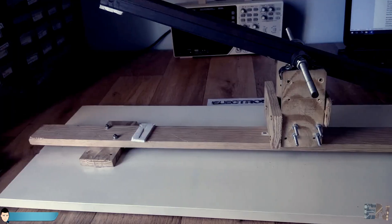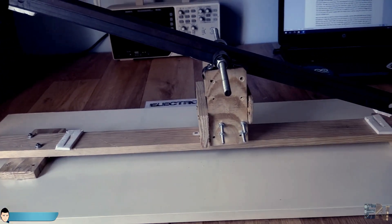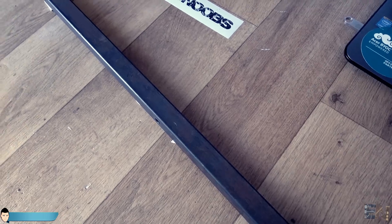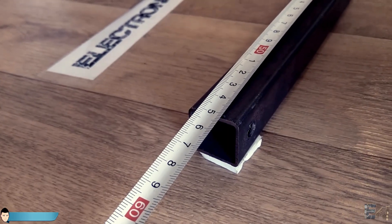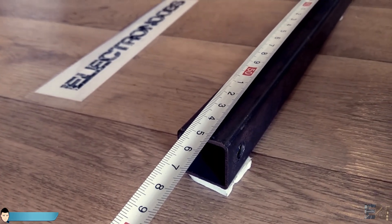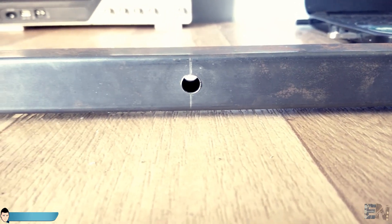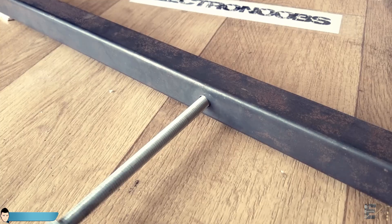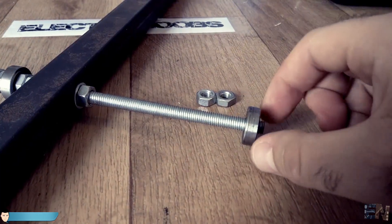The first thing to do is to build a balance for our test. For that I've used a 55cm long square metal bar. I've drilled a hole exactly in the middle. Then I've passed an 8mm screw through the hole and through some bearings.